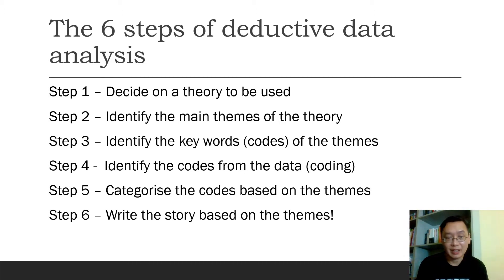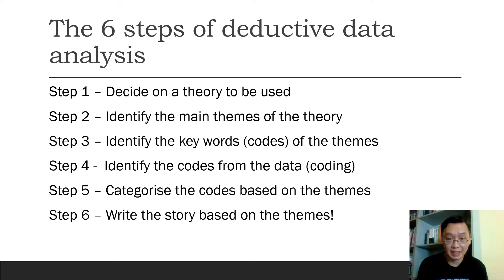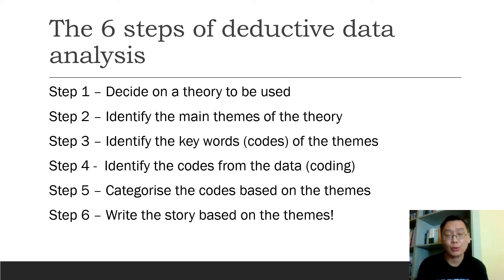There are six steps of deductive data analysis. Step one: you need to decide a theory. This is a bit different from inductive data analysis, where you start with the data. In deductive data analysis, you start with a theory.